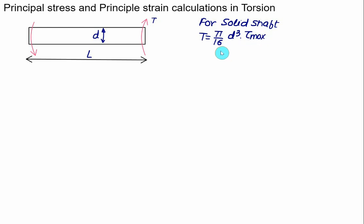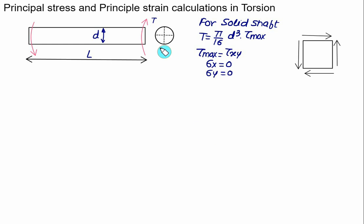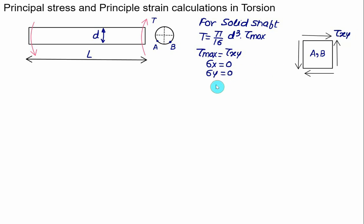Only shear stress is developed in pure torsion. This value of τ_max is labeled as τ_xy, and σ_x = 0 as well as σ_y = 0. At any point on the circumference, the shear stress equals τ_max. So for point A or B, or any point on the periphery, only τ_xy acts and both σ_x and σ_y are zero.